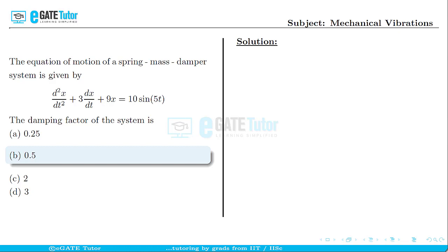First step, let us write down the given equation of motion which is d²x/dt² + 3dx/dt + 9x = 10sin(ϕt). Let us consider that as equation 1.